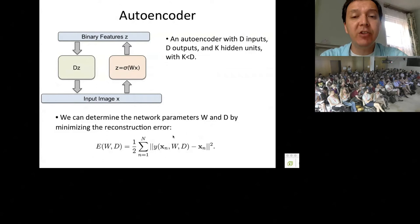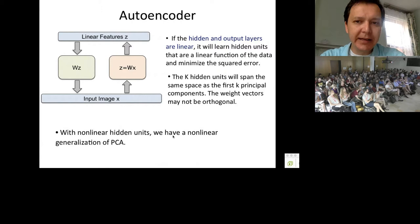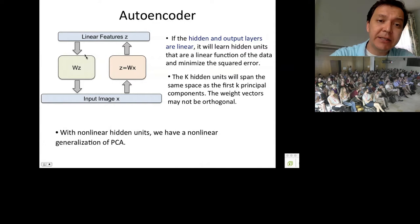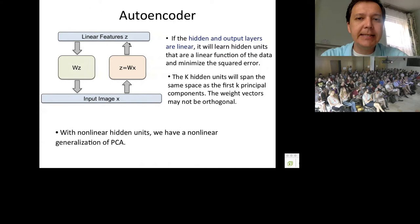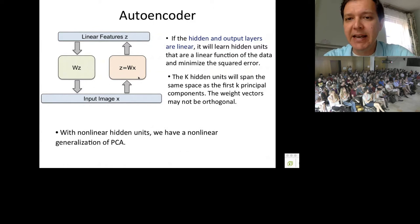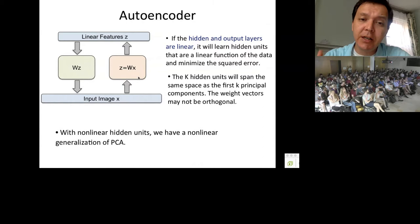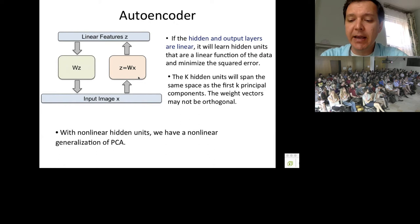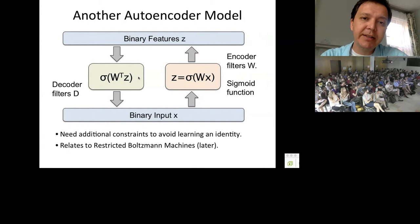It turns out that if the hidden and output layers are linear, the learned K hidden units span the same space as the first K principal components — meaning a linear autoencoder with shared weights is equivalent to PCA. The latent representation spans the K principal components. With nonlinear hidden units and nonlinear transformations in the encoder, you get a nonlinear generalization of PCA. For binary data, using sigmoid encoders and sigmoid decoders is closely related to the Restricted Boltzmann Machine.